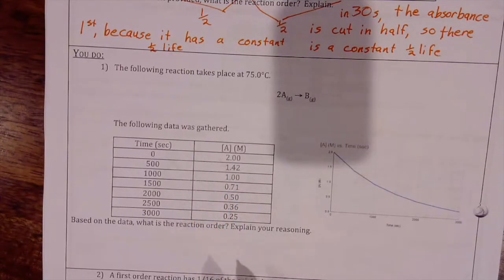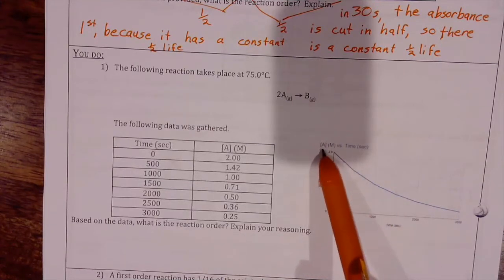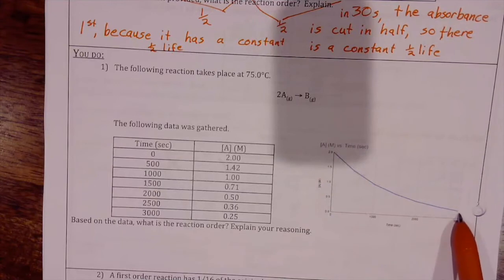Based on the data, what is the reaction order? We can see that when we graph concentration versus time, that this is clearly not linear. So we know it's not zero order.